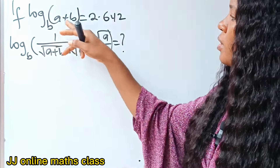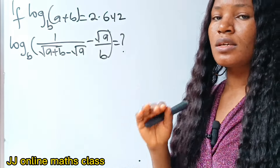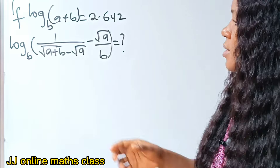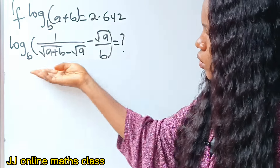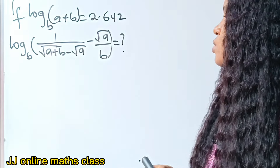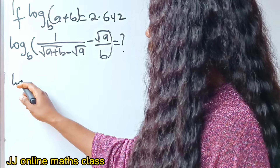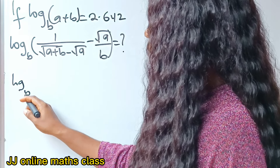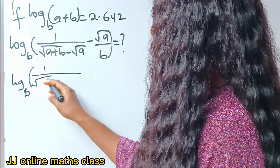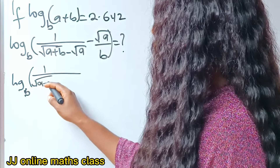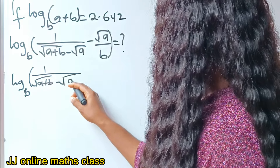We are asked to solve for this: if log base B of (A plus B) equals 2.642, find log base B of 1 over the square root of (A plus B) minus the square root of A.